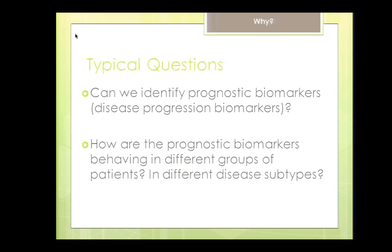The typical questions that people try to answer when they use Transmart are: can we identify prognostic biomarkers — for example, disease progression biomarkers — in our data sets? And also, how do these biomarkers behave in different cohorts of people or in different studies? That's an exact parallel to the talk that Eugene just presented, showing how another team solved this question.